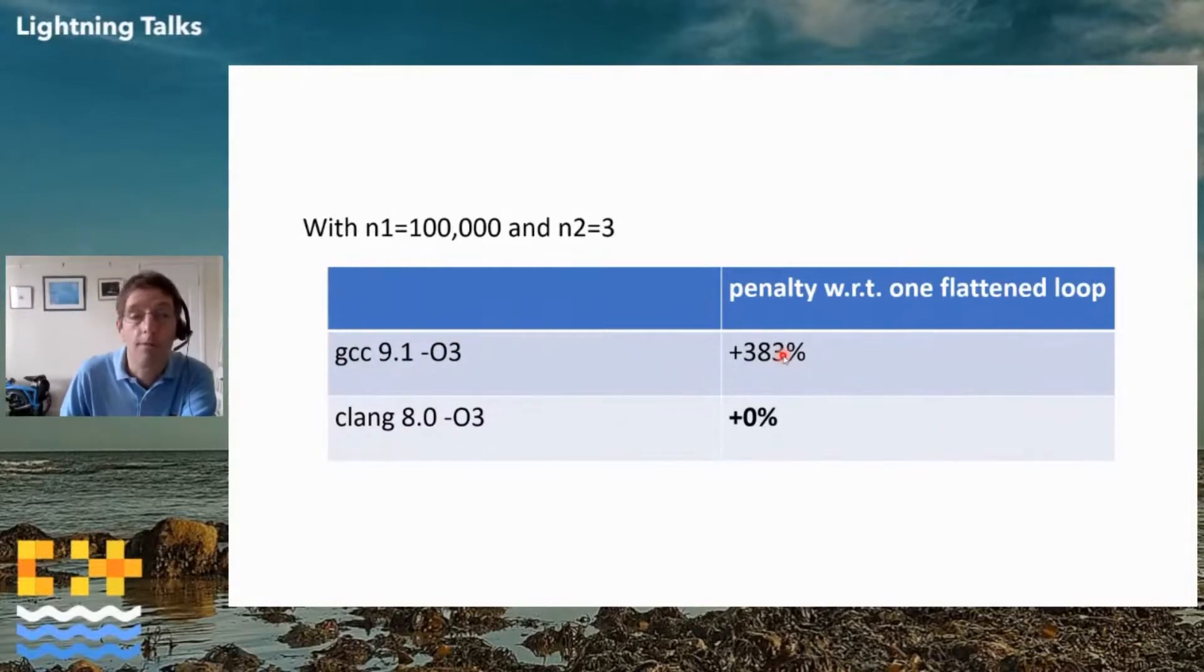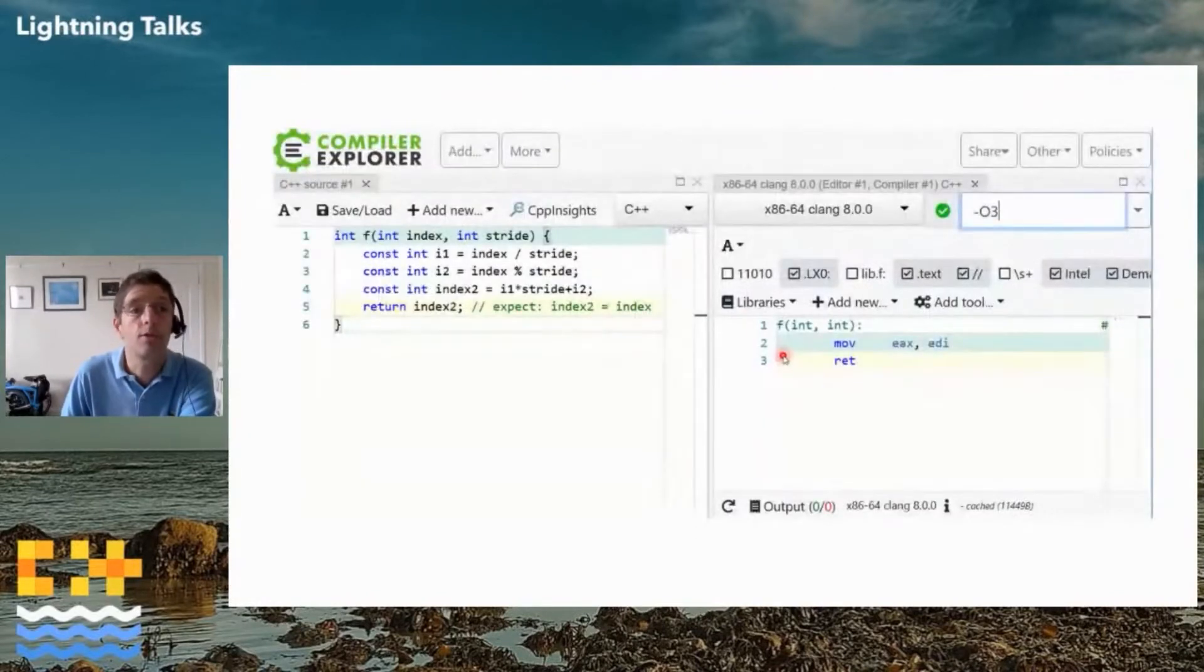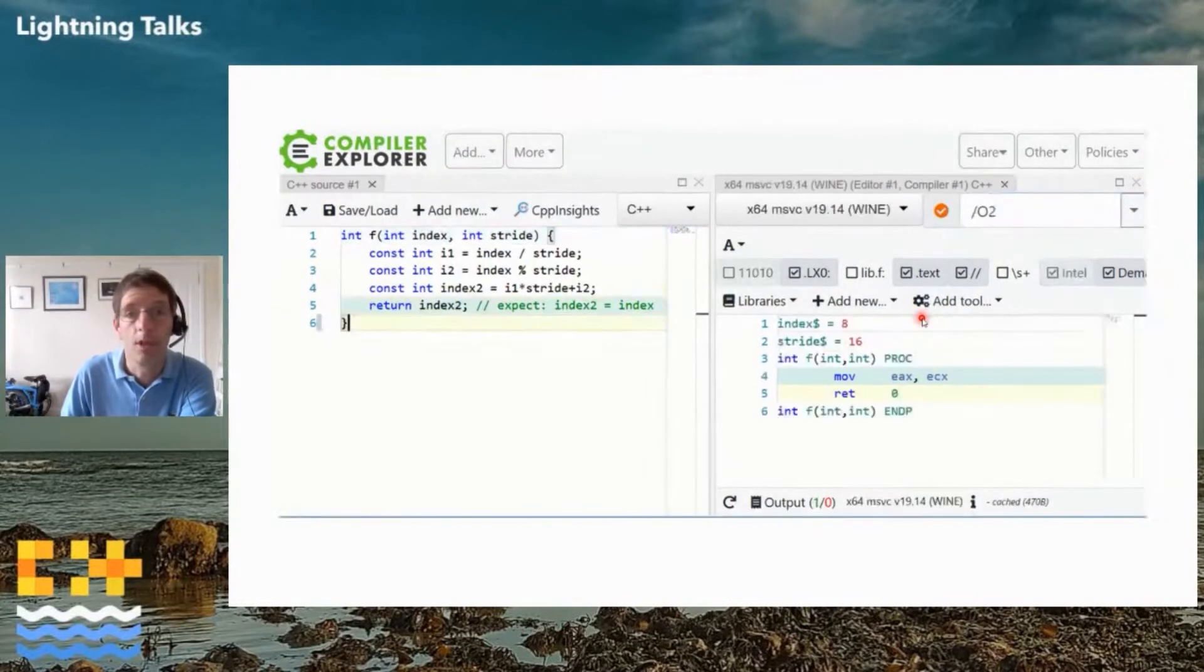When you want to find out why things are slower, you go to Compiler Explorer. So I wrote a very small code with that very same formula. If I use Clang 8 or 9 or 10, you can see that indeed it's recognized that index2 is equal to index1, so it does a perfect optimization. Then you can do exactly the same thing with Visual Studio 2017, and as you can see, it's done the perfect optimization.